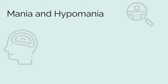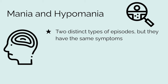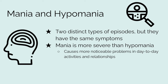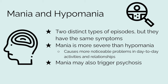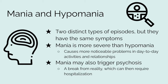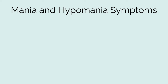People with bipolar disorder can have mania or hypomania, which are two distinct types of episodes, but they have the same symptoms. Mania is more severe than hypomania, is more noticeable to other people, and causes more noticeable problems in day-to-day activities and relationships. Mania may also trigger psychosis, which is a break from reality, which can then require hospitalization. In order to be categorized as having a manic or hypomanic episode, at least three of the following symptoms must be present.